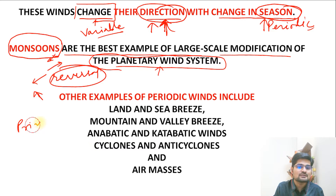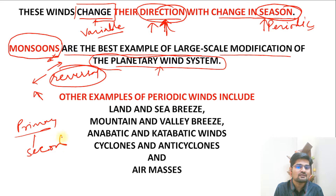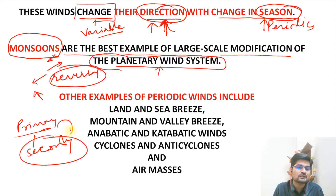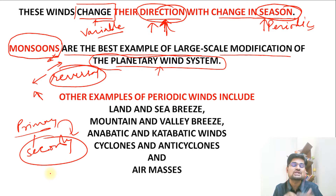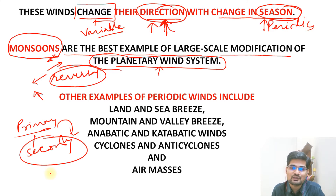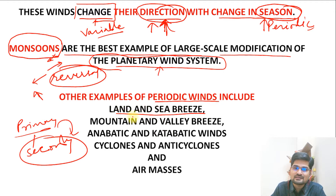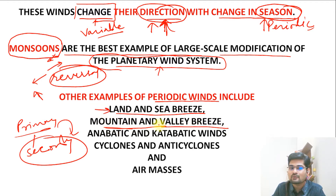Remember, primary is the basic and secondary is the derivative — secondary winds are derived from primary sources. Primary winds are the larger chunk, out of which in a particular season when a particular air mass changes its nature, that is where we call it a secondary wind. Other examples of these periodic or secondary winds are land and sea breeze on a regional scale, and mountain and valley breeze — one near coastal areas and one in mountain and valley regions.